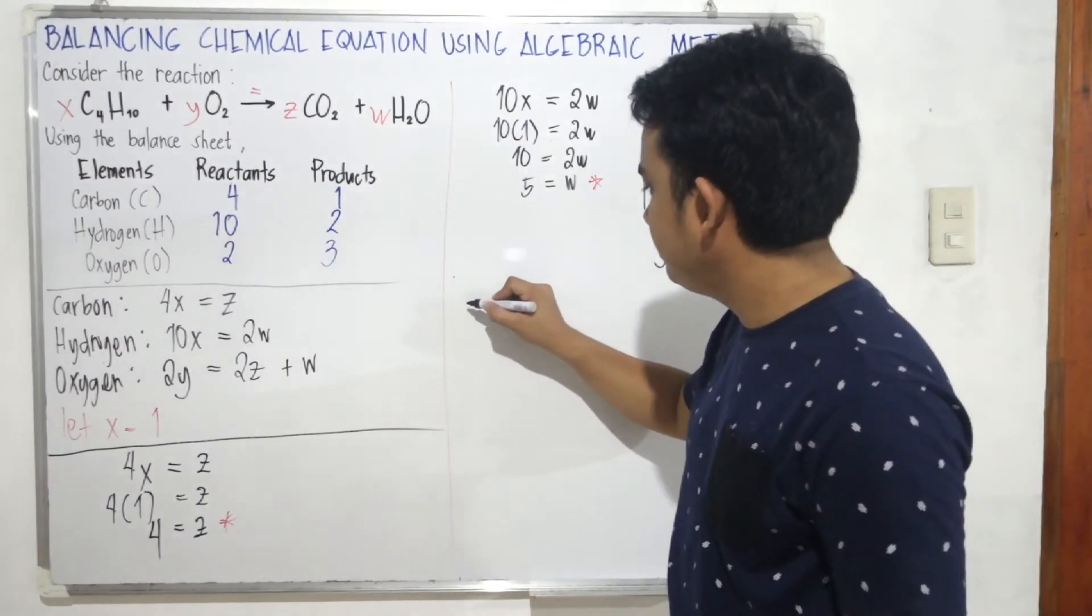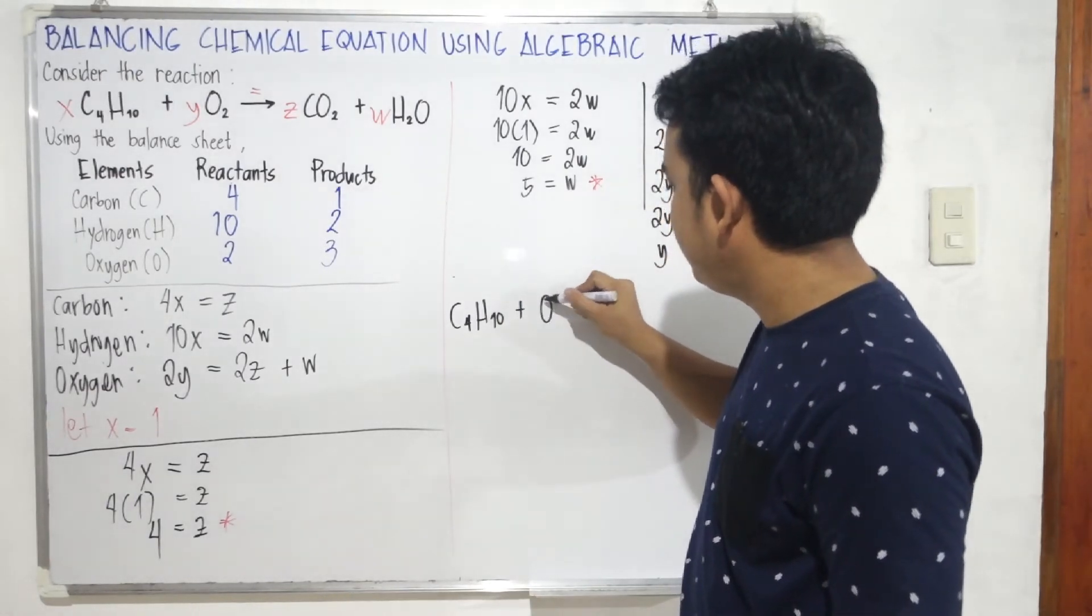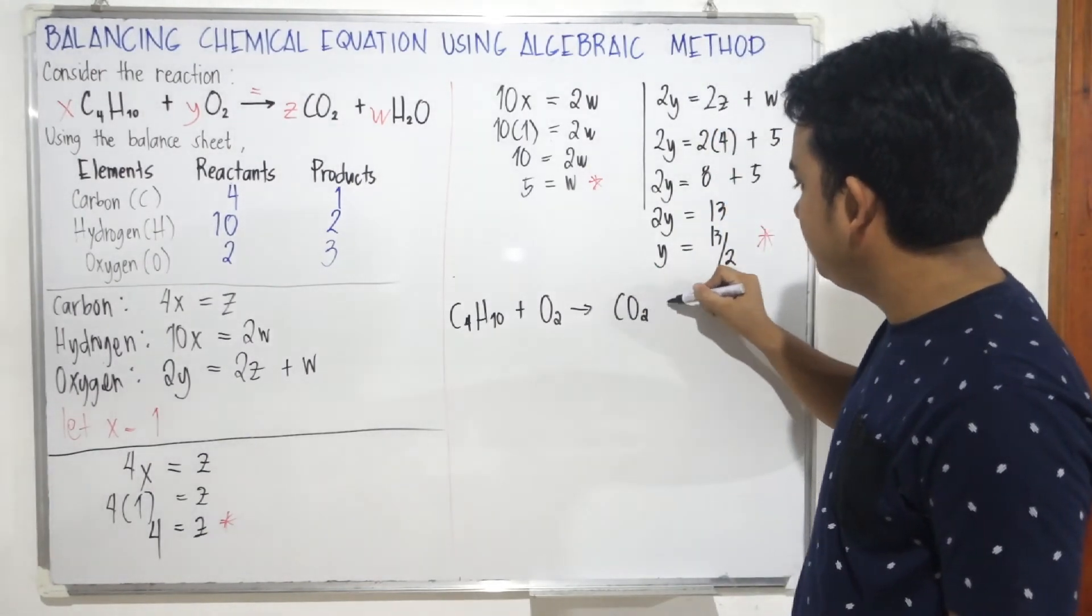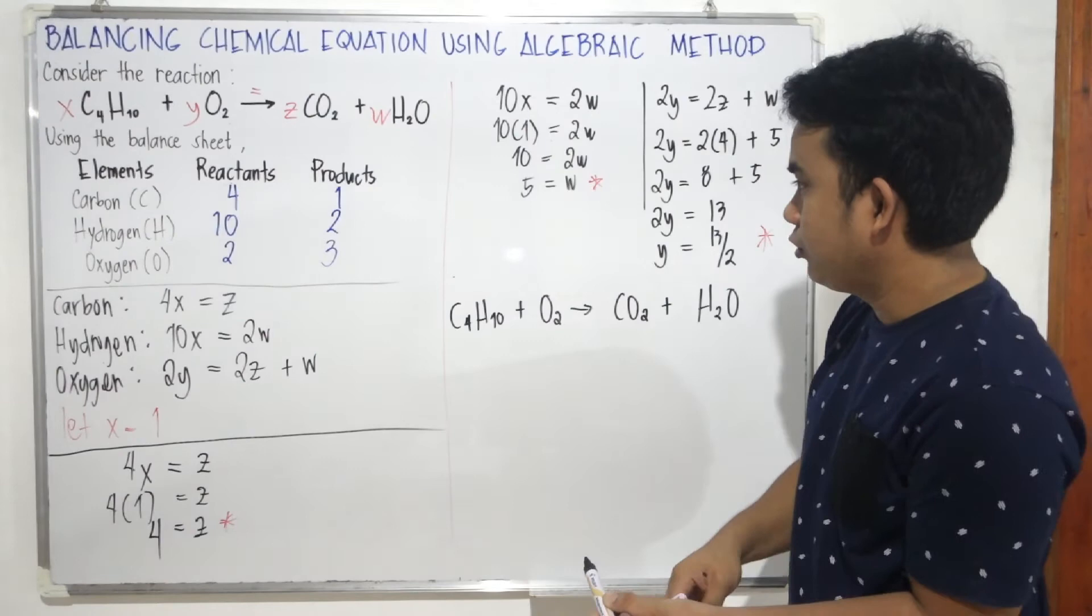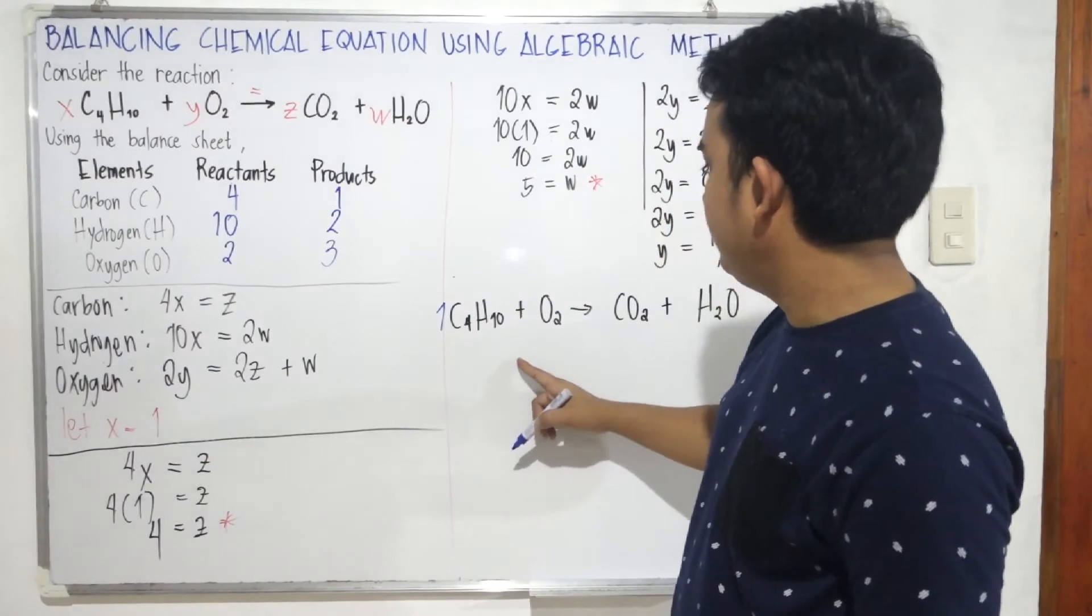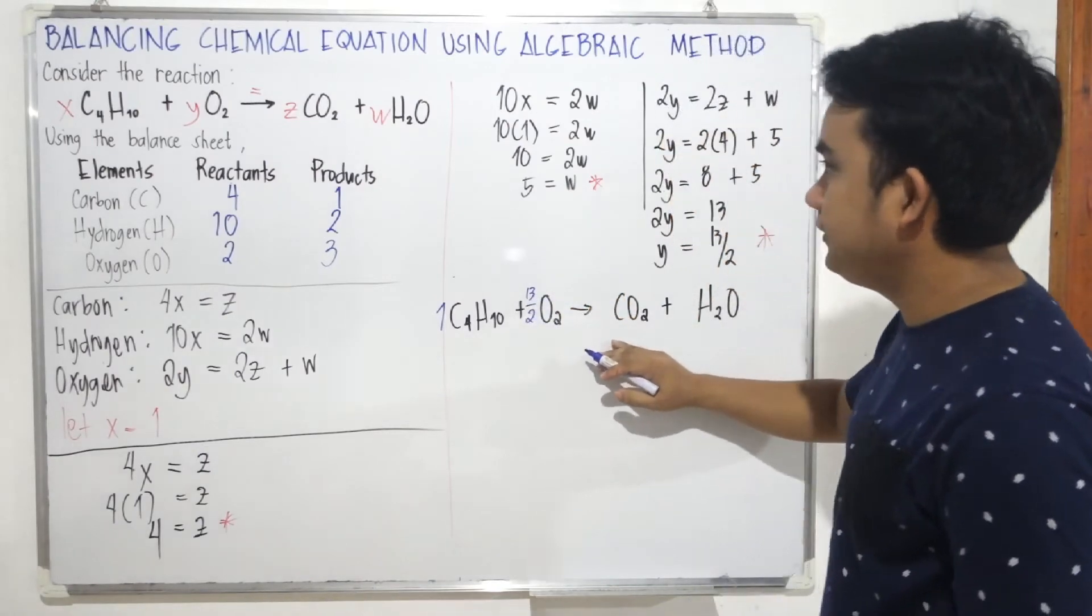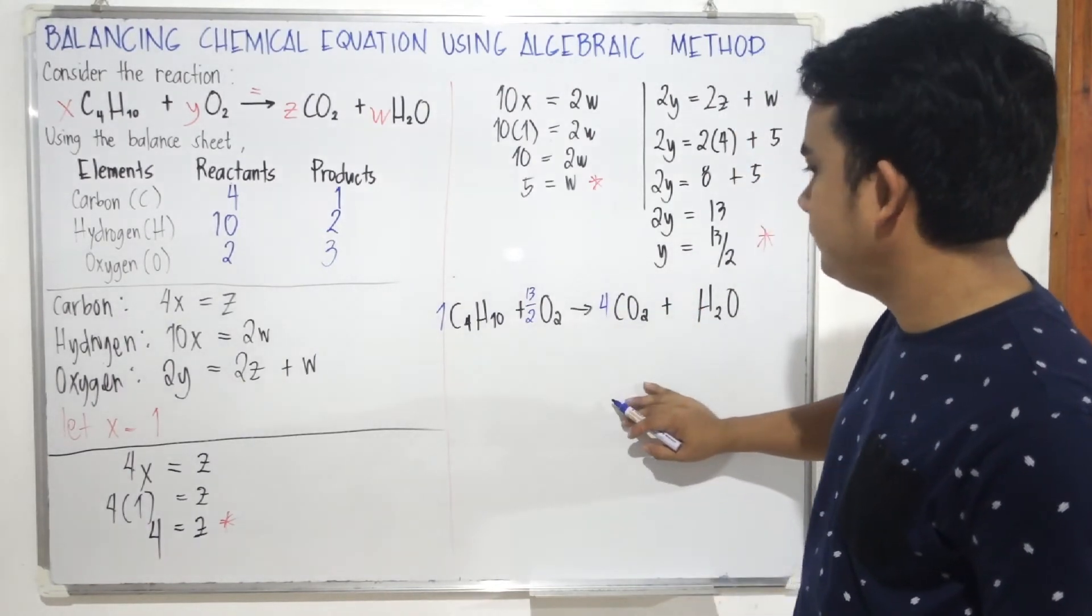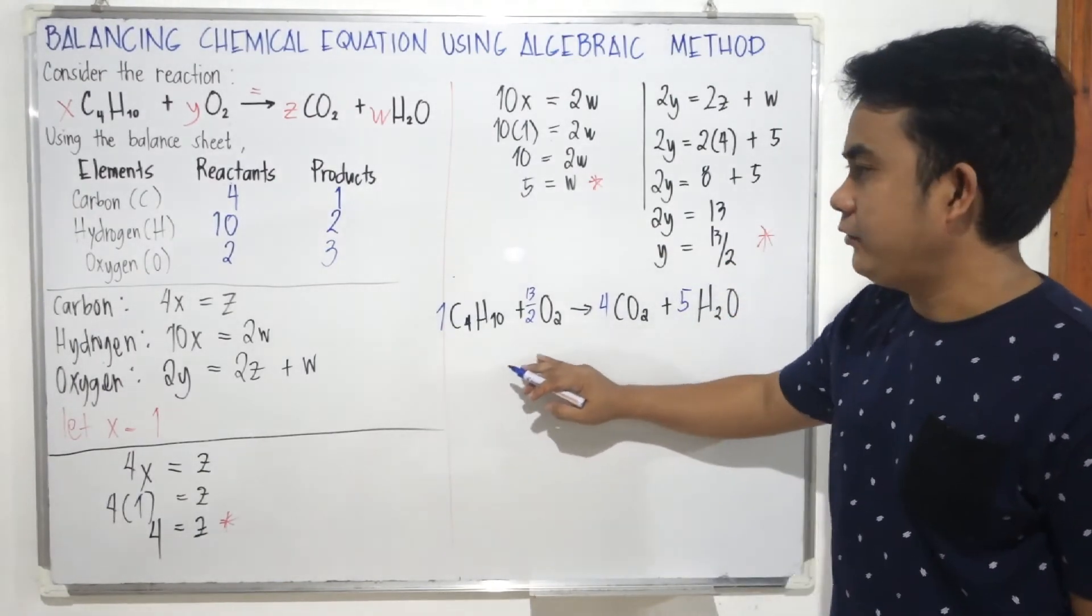We'll add one by one the coefficients we solved to the chemical reaction given. C4H10 plus O2 will yield 4 CO2 plus H2O. We'll add the coefficients we solved. For x we have 1. For O2 which is y, y is 13 over 2. z is 4. And w is 5. As you can see, the equation is balanced, but